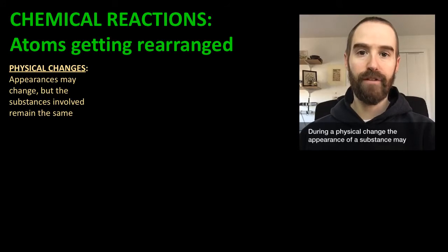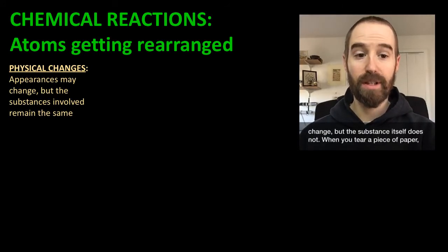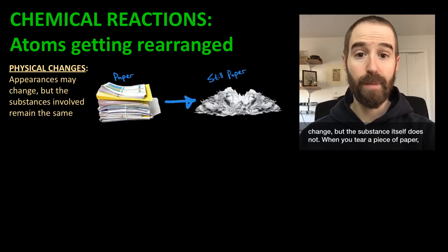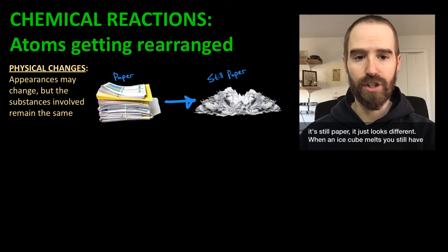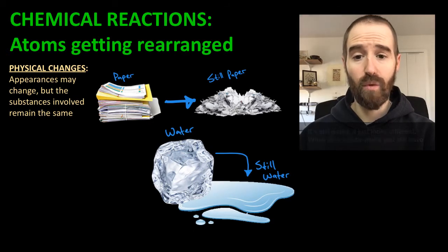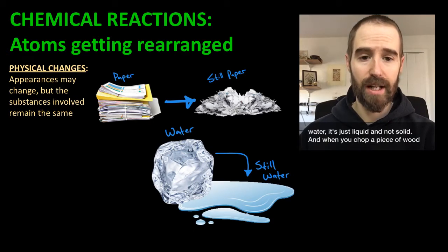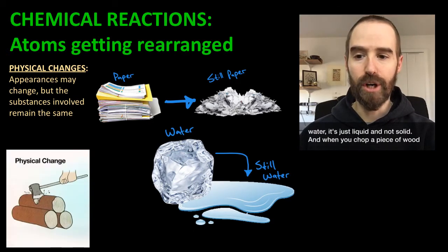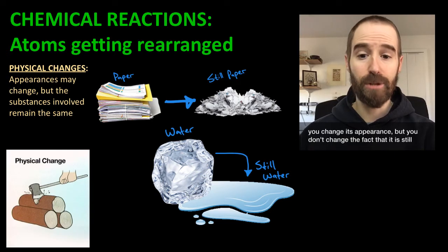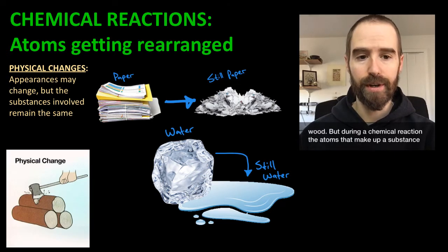During a physical change, the appearance of a substance may change, but the substance itself does not. When you tear a piece of paper, it's still paper — it just looks different. When an ice cube melts, you still have water, it's just liquid and not solid. And when you chop a piece of wood, you change its appearance, but you don't change the fact that it is still wood.